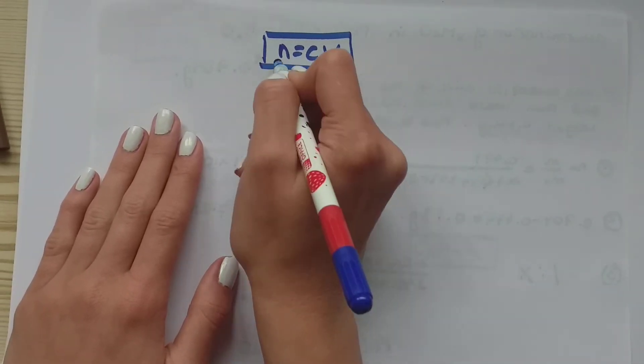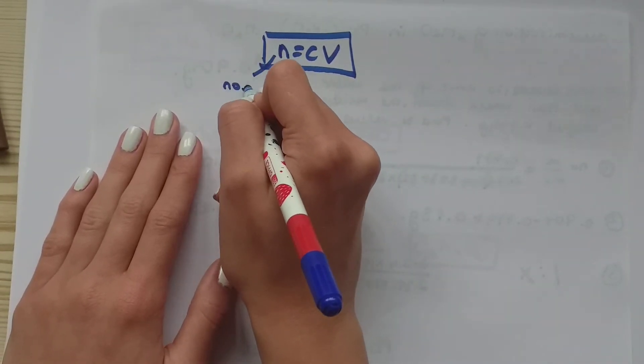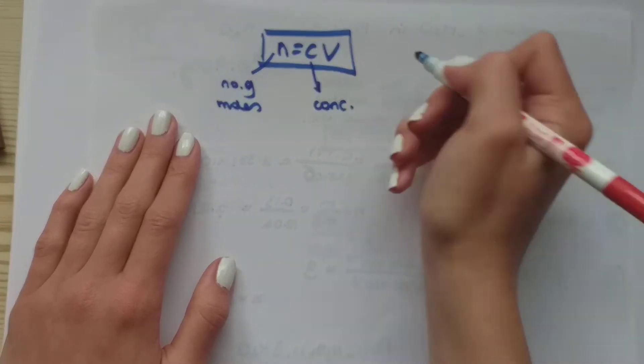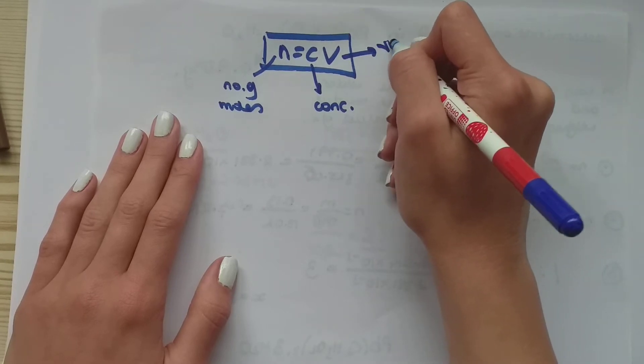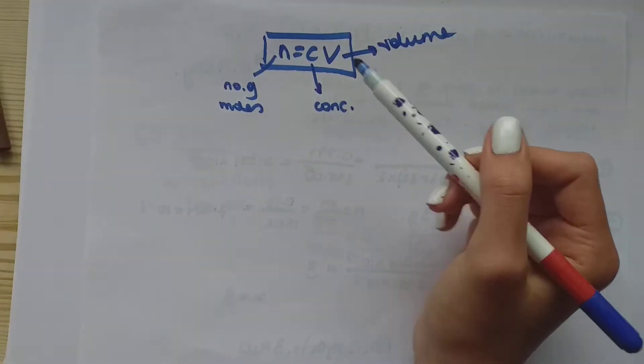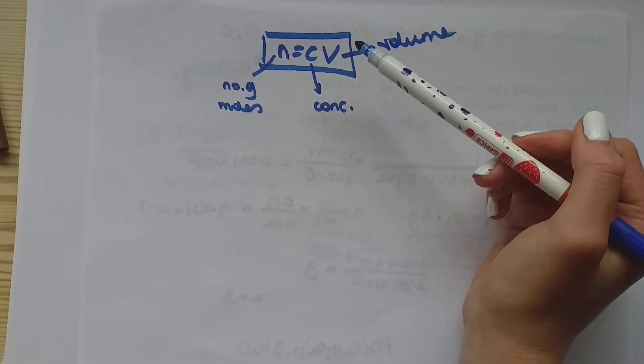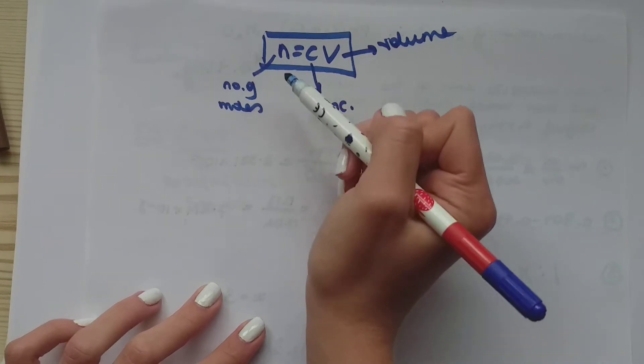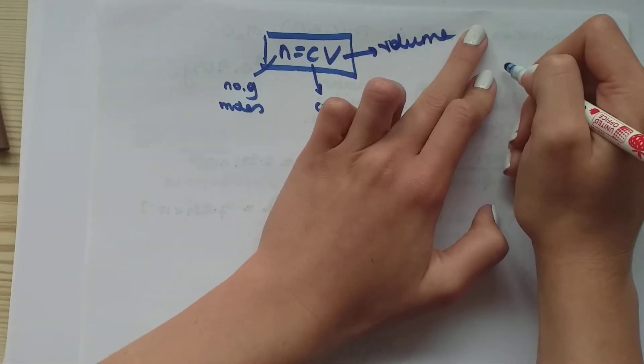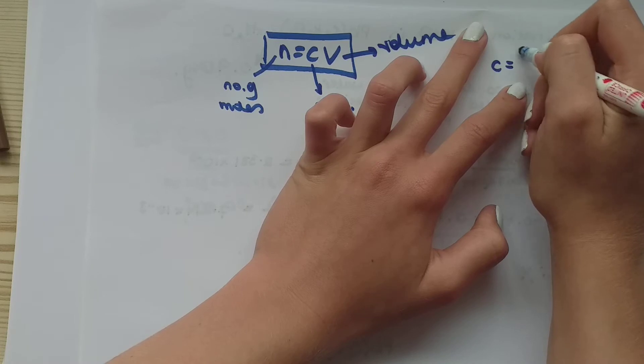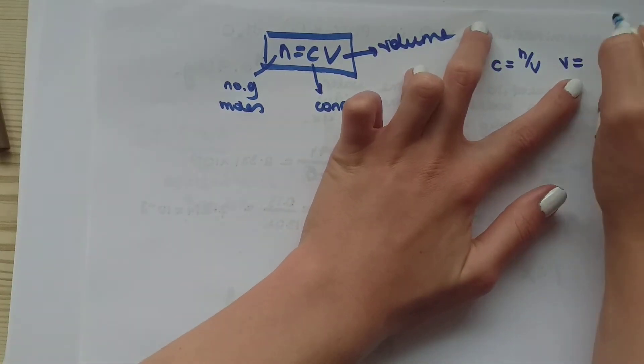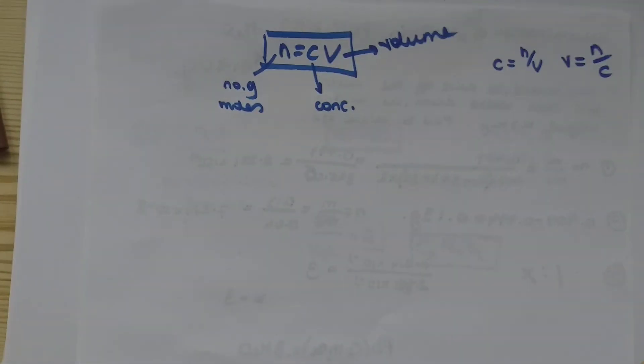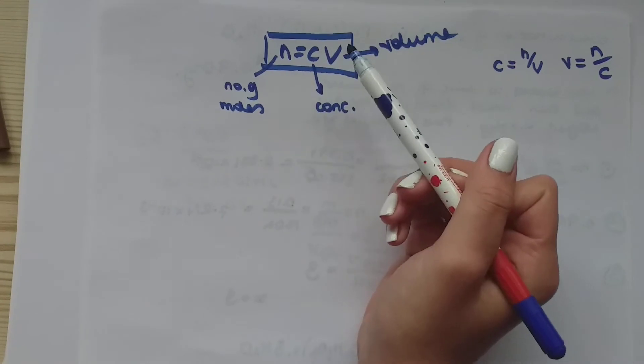So this equation has number of moles, C as the concentration and V as the volume. Volume, concentration, number of moles. Again, this equation will not be given in your data booklet, so you have to remember it. I like to remember it this way, n equals CV, but you can also remember it by this or by this. Whichever ones you like, I like to remember it this way.